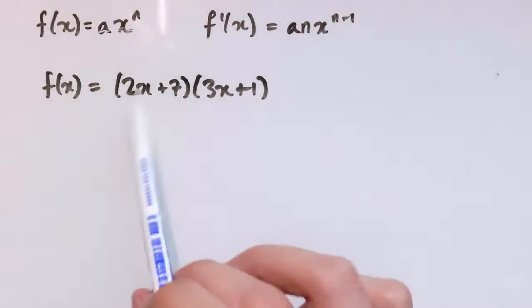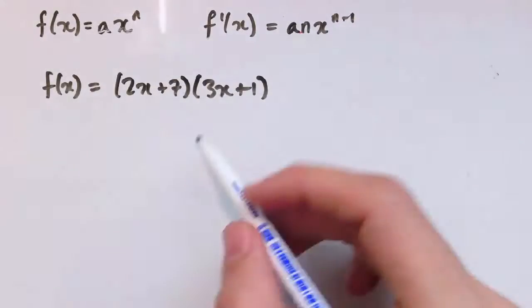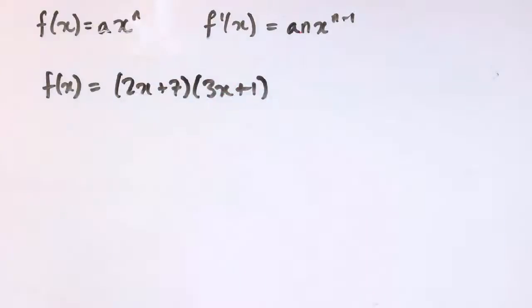So let me tell you the common mistake first, which is to say, oh okay, well 2x differentiates to 2, 7 goes to 0, 3 goes to 3, 1 goes to 0, so this is just 2 times 3, which is 6.